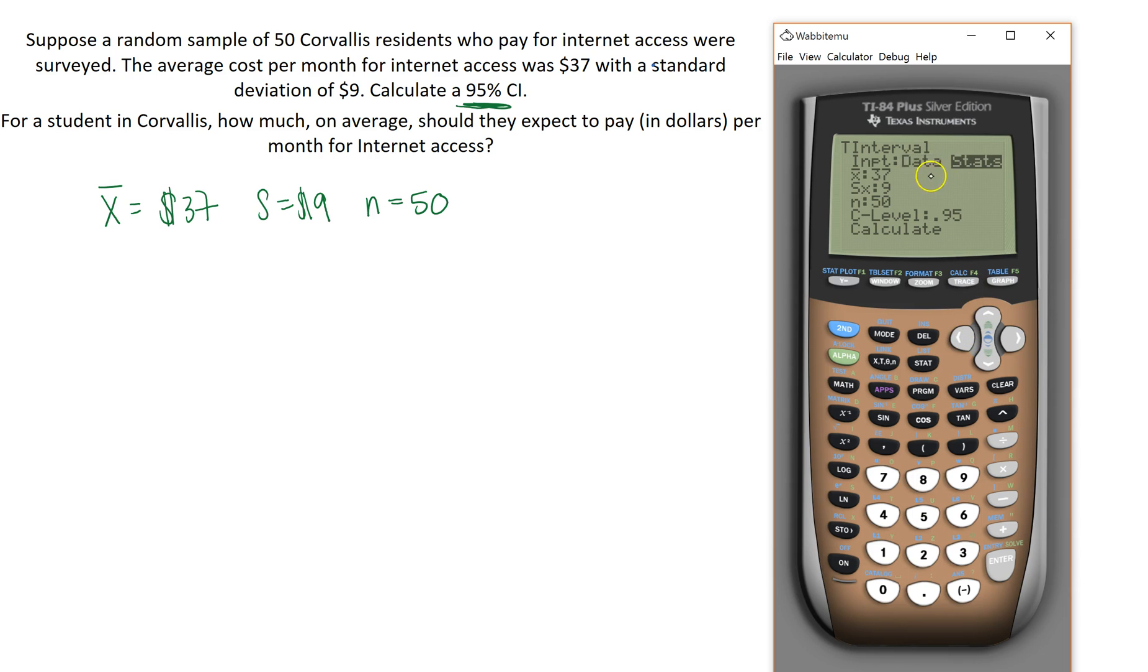Here you have two options. You can put in data, which will be like a list from one of your lists, or you can put in the summary statistics. I've already put them in, but I'll re-enter them. So 37 is our sample mean. Sx, which is the same as our sample standard deviation, is 9. Our sample size is 50.